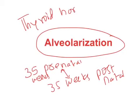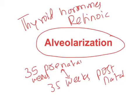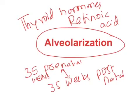Normal thyroid hormones are needed for alveolarization, and also a sufficient amount of retinoic acid. Retinoic acid is a type of vitamin A and it participates in cell growth and differentiation. So thyroid hormones and retinoic acid are important for the alveolarization process, which takes place between 35 weeks of prenatal age to 35 weeks of postnatal age.